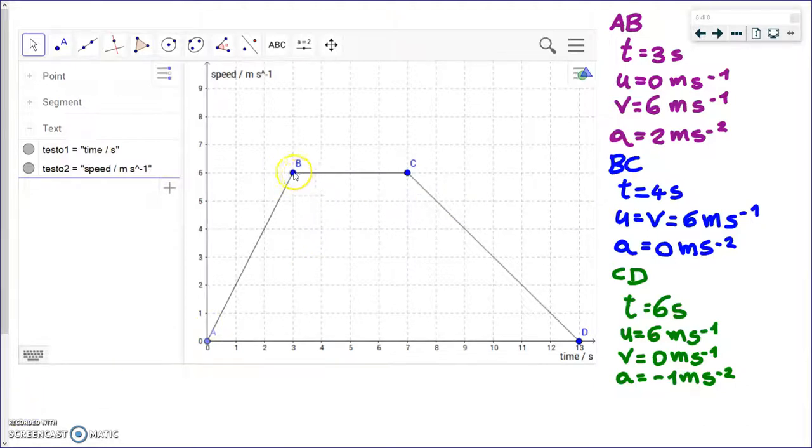From B to C, we have a flat line. As we said previously, a flat line in a speed time graph means a constant speed. How much is this constant speed? It is 6. For this amount of time, from 3 seconds to 7 seconds, that is 4 seconds, we have a constant speed of 6 meters per second. But if the speed is constant, you can do the calculation yourself, or you can just write, the acceleration is 0, 0 meters per second squared.